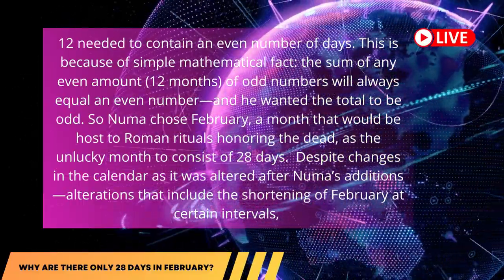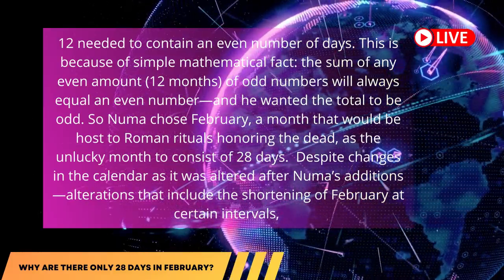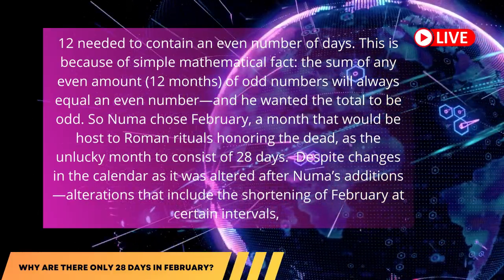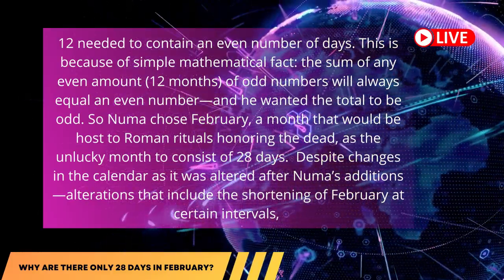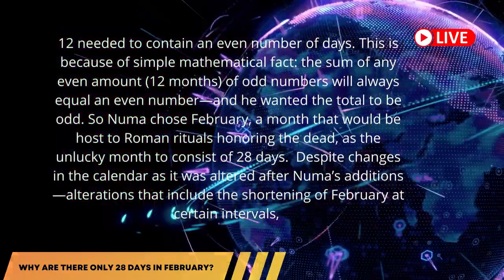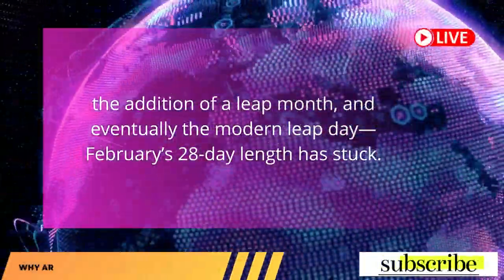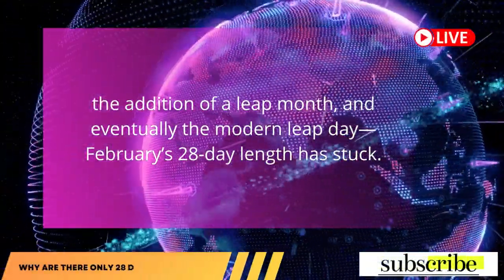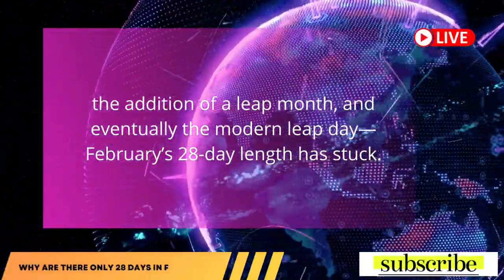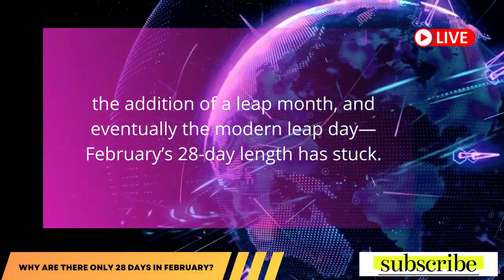Despite changes in the calendar as it was altered after Numa's additions — alterations that include the shortening of February at certain intervals, the addition of a leap month, and eventually the modern leap day — February's 28-day length has stuck.